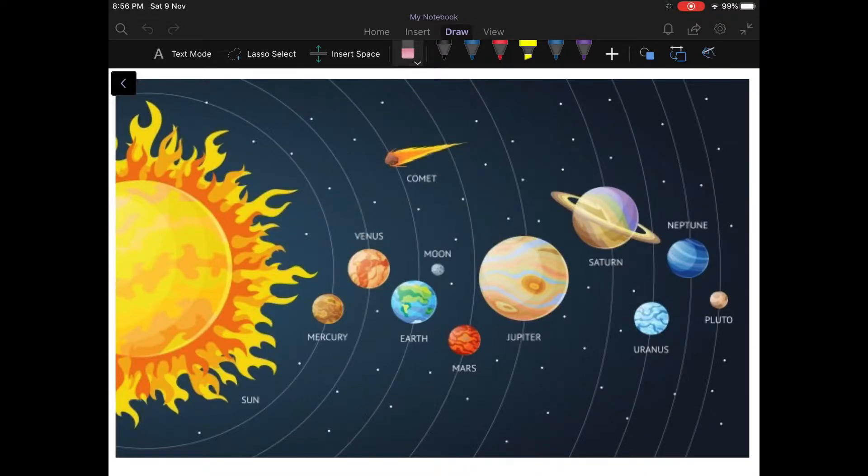After Jupiter comes Saturn. Saturn has a ring and Saturn has the largest number of moons compared to any other planets in our solar system.